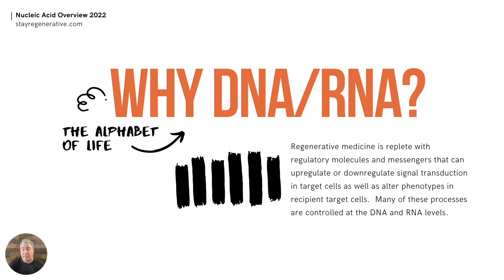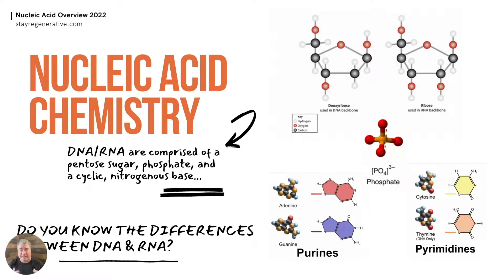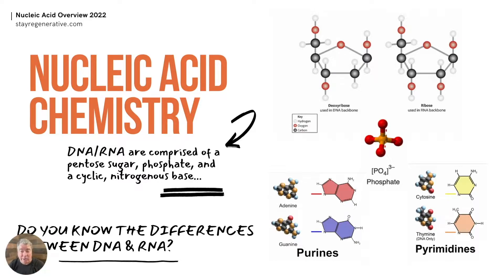In our last session on cytokines, we talked about redundancy — there's a lot of redundancy built into how these mediators are regulated, and regulation at the DNA and RNA level is certainly an important part of that. So when you talk about nucleic acid chemistry, it's important to know exactly what it is. DNA stands for deoxyribose nucleic acid and RNA stands for ribose nucleic acid. These are pentose sugars linked to a phosphate, and it's this phosphate that is highly reactive.